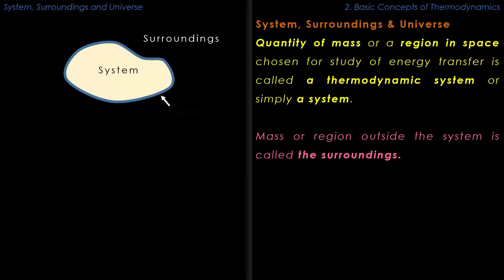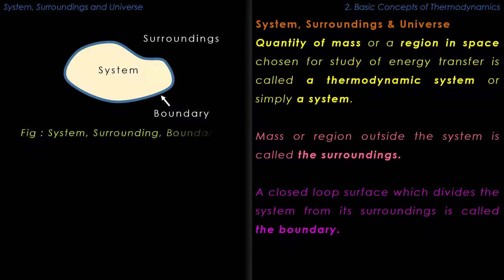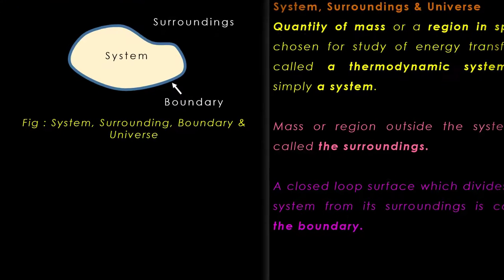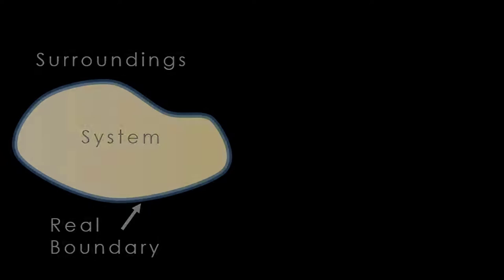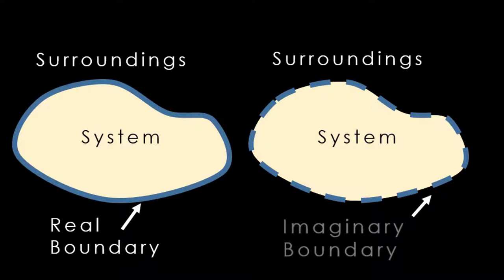A closed-loop surface that divides the system from its surroundings is called the boundary. A boundary can be real, bounded by real solid closed walls, or it can be an imaginary boundary with the boundary surface being an imaginary construct.